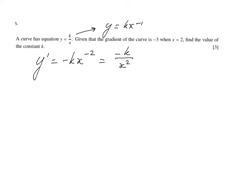Now what do they say? They say the gradient is minus 3 when x is 2. So if we plug in x equals 2, we're going to get minus k over 2 squared, and that has to equal minus 3.